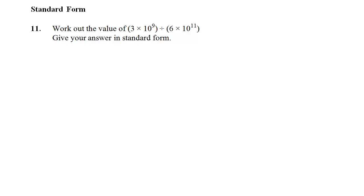This is a very important type of question that you need to be able to do with standard form without a calculator. So we're dividing 3 times 10 to the 9 by 6 times 10 to the 11. The key here is to write the thing out as a fraction. A division is the same as a fraction, so you can write it as 3 times 10 to the 9 over 6 times 10 to the power 11.